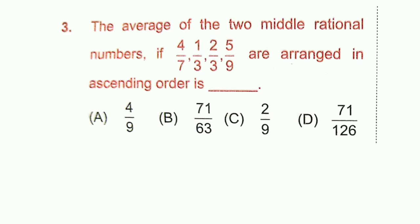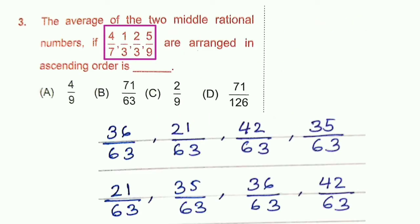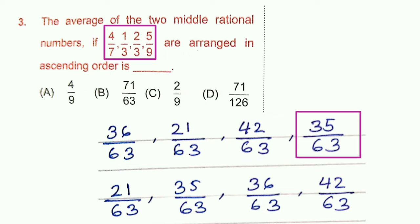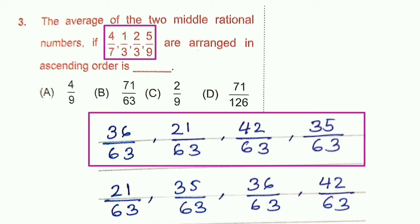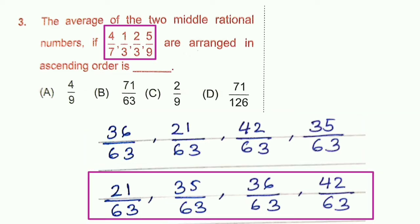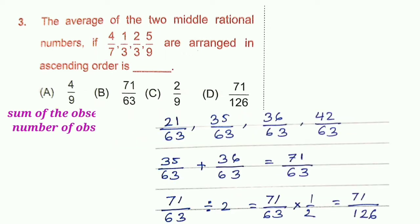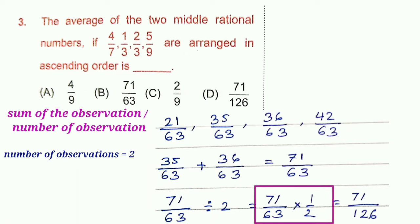Question 3: Find the average of the 2 middle rational numbers when 4/7, 1/3, 2/3, 5/9 are arranged in ascending order. Find the LCM = 63: 4/7 = 36/63, 1/3 = 21/63, 2/3 = 42/63, 5/9 = 35/63. Ascending order gives the two middle numbers as 35/63 and 36/63. Their average = (35/63 + 36/63) ÷ 2 = 71/63 × 1/2 = 71/126. Option D is correct.